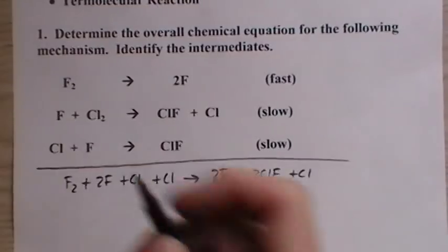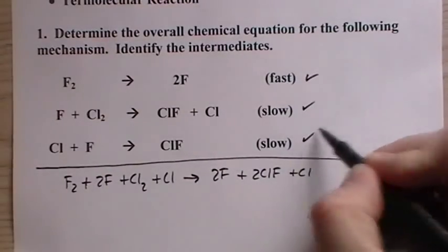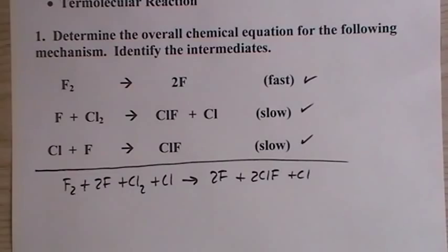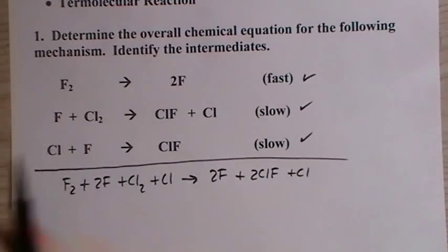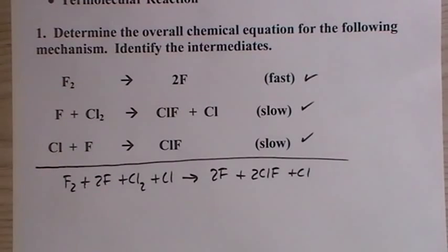And you know it's a mechanism, first because I told you, but when you see these statements here, these designations, fast, slow, slow, you're talking about a mechanism. Notice there's no phases. Normally you don't put any phases like gas or liquid or solid into a mechanism because we're talking about individual molecules or atoms.